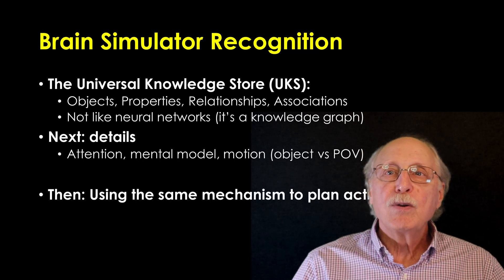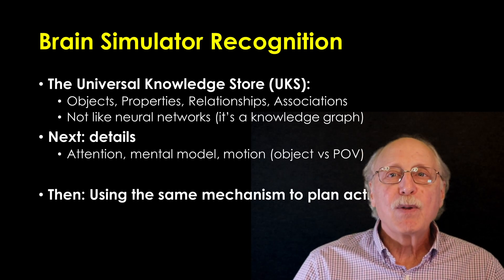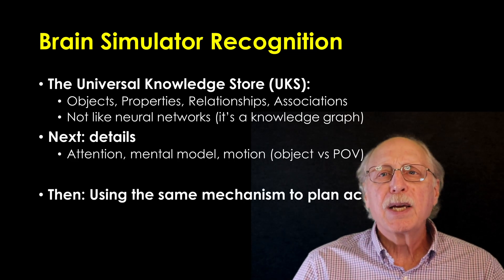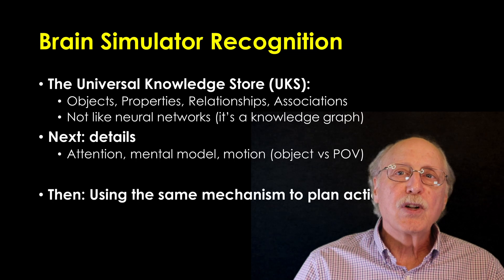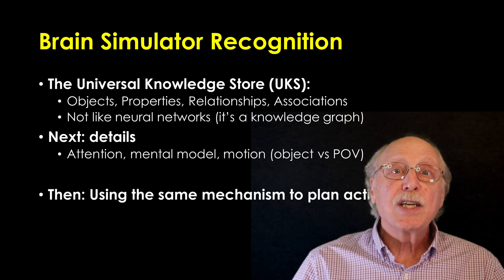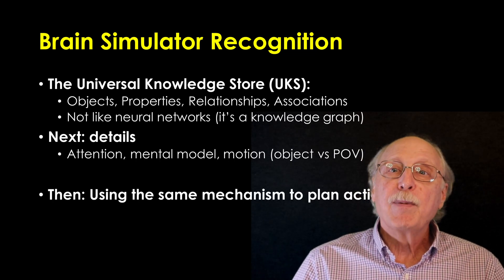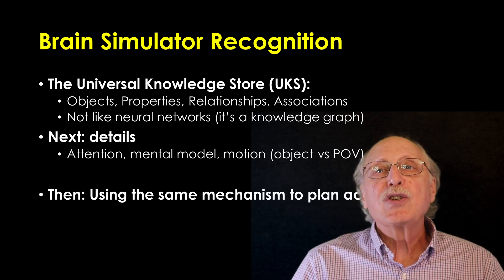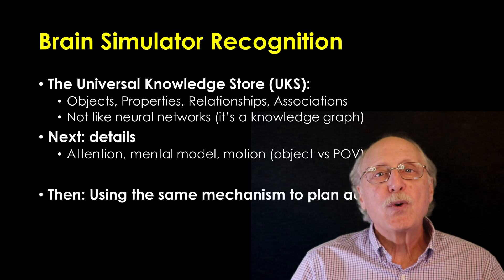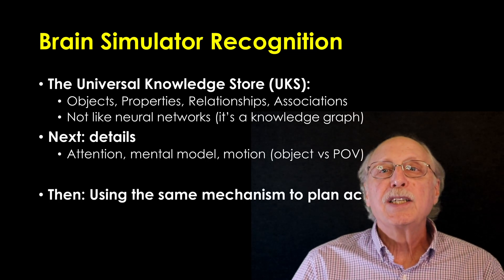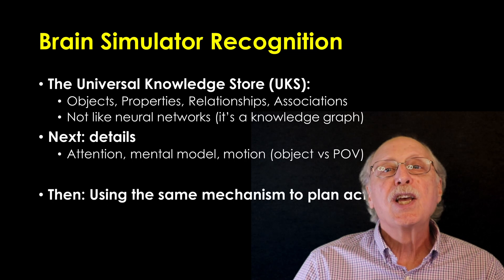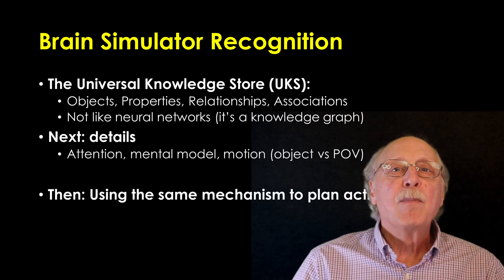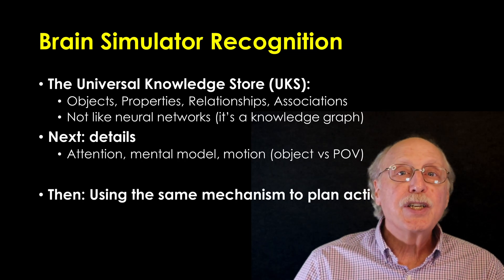In future videos I'll show details of how the process works. This will introduce some interesting concepts like paying attention, building an internal mental model, and detecting object motion and differentiating it from a change in point of view. In the next major step toward AGI, I'll show the Brain Simulator controlling a robot to demonstrate how the UKS and sensory feedback can be harnessed to implement motor control, planning, and intention.